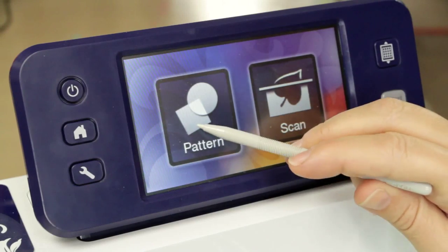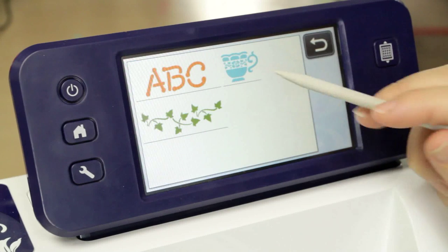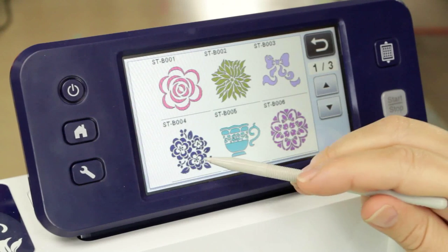And then from the home screen I'm going to choose pattern, and on the second screen there are a whole bunch of built-in stencil patterns. So I'm going to grab one of the stencil patterns. I like these flowers a lot.